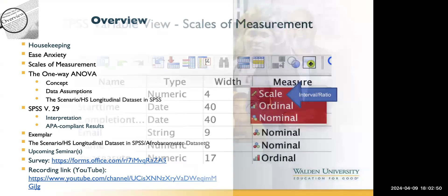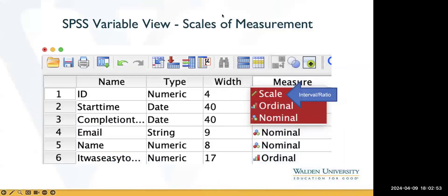Let's jump into the scales of measurement. In SPSS, anytime we look at a variable in a data set, one of the most important things to understand is the scale of measurement. We have four types: nominal, ordinal, interval, and ratio. Interval and ratio are both represented by 'scale' in SPSS, so you do have four scales of measurement.